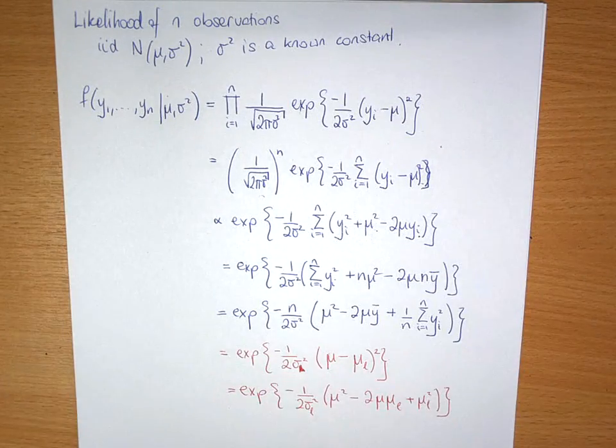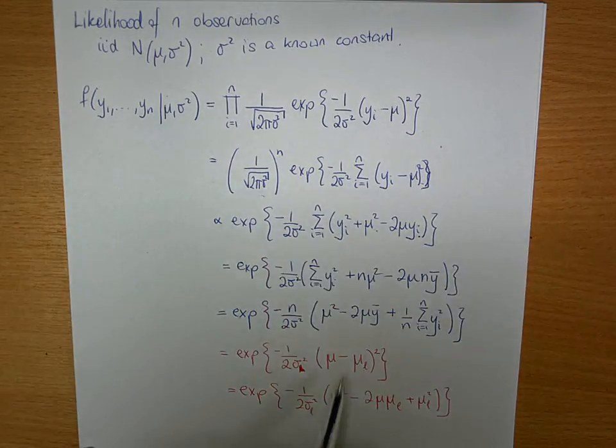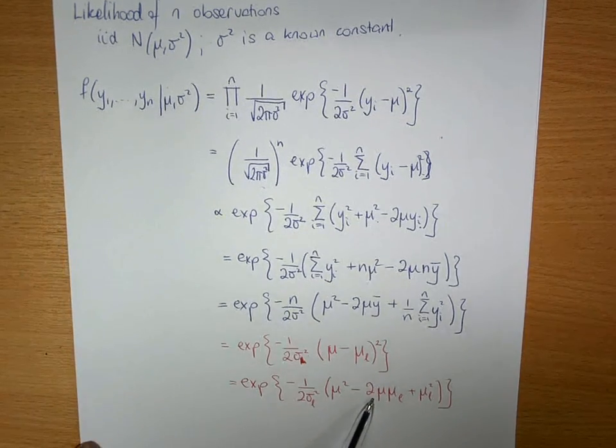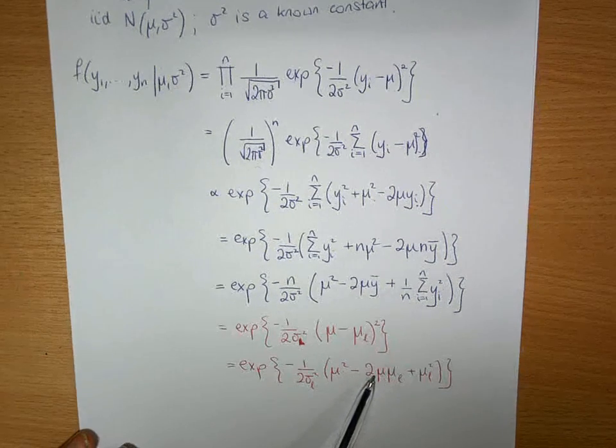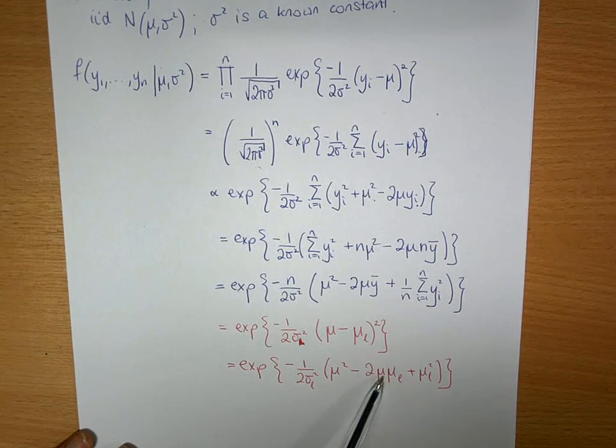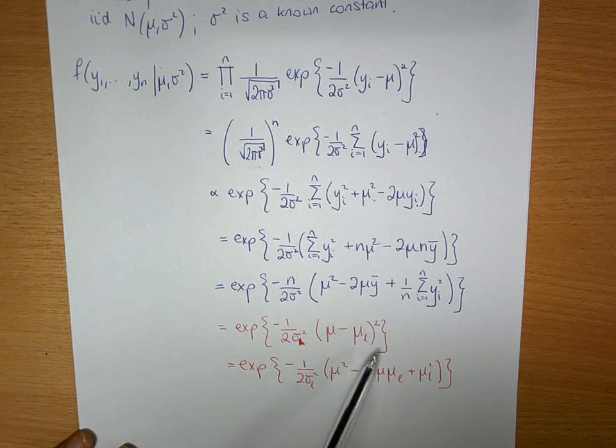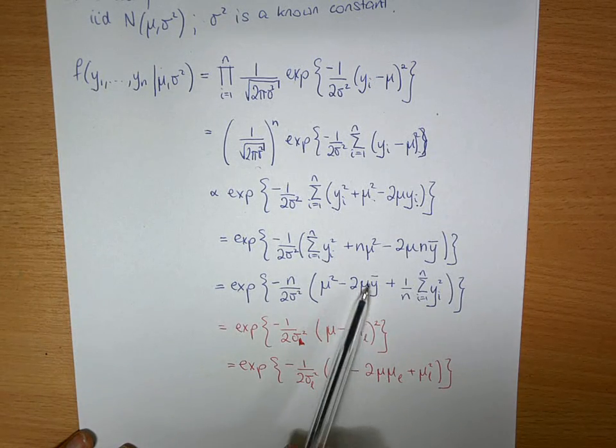And if we match up the powers of mu, here's our first power. Furthermore, we get minus 2 mu here and we've minus 2 mu up here, so we get mu l is y bar.